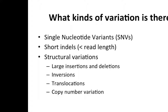There are a lot of different categories of variations. There are single nucleotide variants — single bases that have been changed in the reference. There are short indels, defined as indels less than the read length — pieces of sequence inserted or deleted from the reference. And then there are larger structural variations, like large insertions and deletions, pieces of the reference that have been inverted, translocations where whole arms of chromosomes could be swapped, and copy number variation where some sequence has been amplified or deleted.